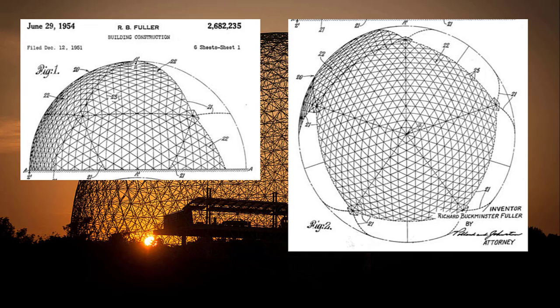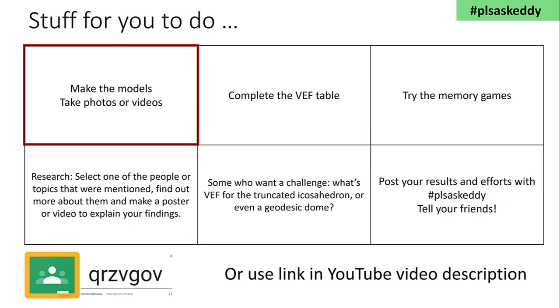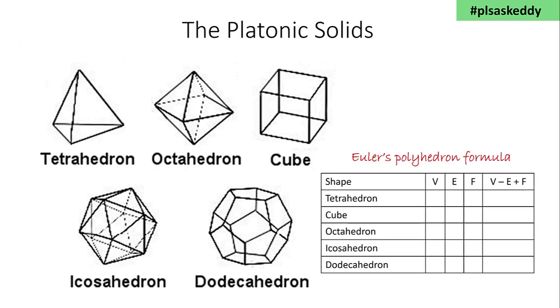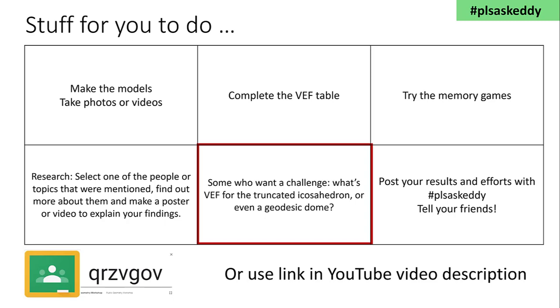Well, that's it for today's workshop. All that remains is to look at the stuff you might do. You might make the models, take photos or videos. Complete the VEF table. That's the table counting the vertices, edges and faces of the various 3D solids we've looked at. If you want a challenge, you might try to do that for a truncated icosahedron, or even a geodesic dome. Try the memory games.